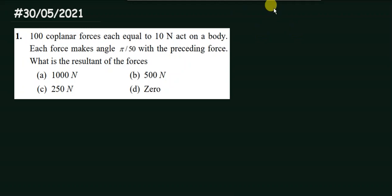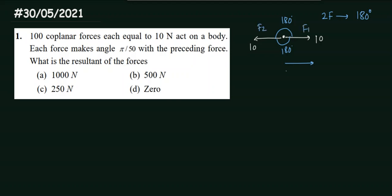Let's start with basic concepts. Say there are two forces acting on a body — force 1 is 10 Newton and force 2 is also 10 Newton. To find the resultant, note the angle they make with each other is 180 degrees. When you place the tail of force 2 on the head of force 1, you get a closed figure and the resultant comes out to be zero.